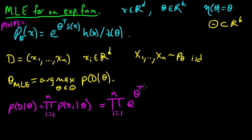E to the theta transpose, so this is the inner product, right? Theta transpose S of x, so this is the inner product or the dot product if you will. Theta times S of xi, times h of xi, divided by z of theta.